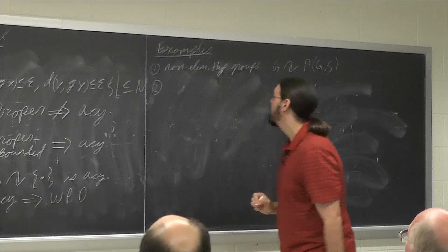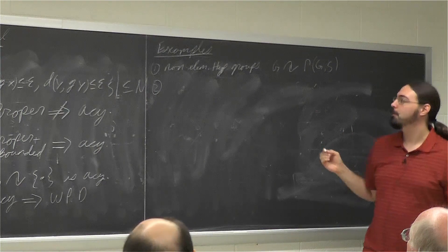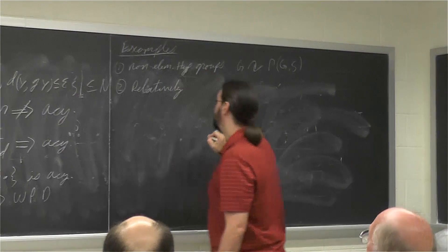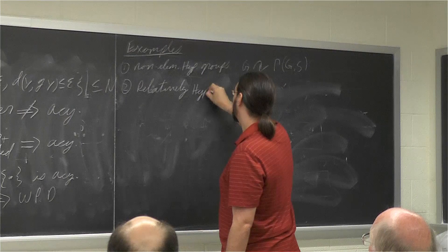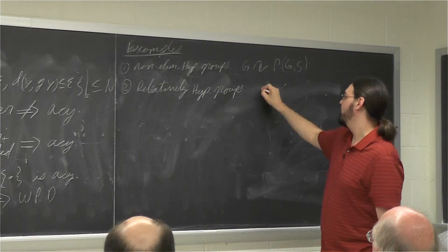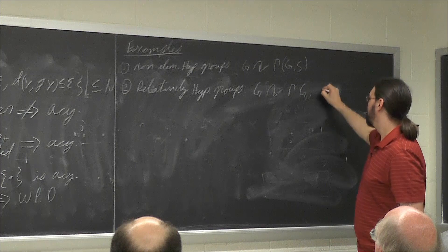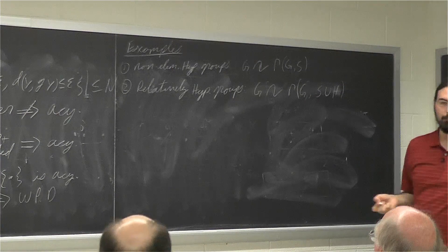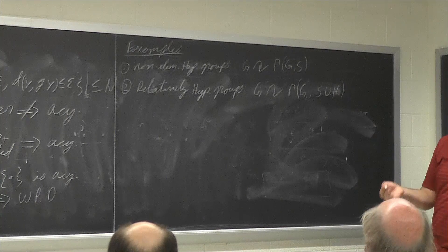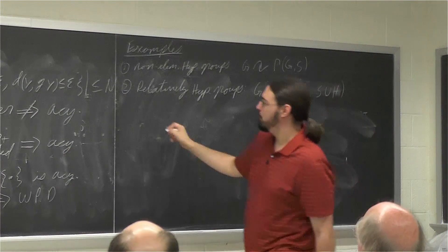A lot of the machinery built for hyperbolic groups has been generalized to relatively hyperbolic groups, which also fall into this class. If H is your parabolic subgroup, you take a finite generating set together with that subgroup to get what's called the relative Cayley graph, which is a hyperbolic metric space. The action of the group on this is acylindrical — this form is also due to Osin.